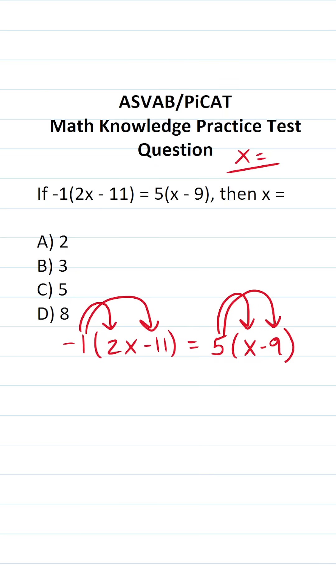What is negative 1 times 2x? A negative times a positive is going to be a negative, so this is negative 2x. Negative 1 times negative 11, a negative times a negative becomes positive. So this is positive 11 equals 5 times x is 5x. 5 times negative 9,